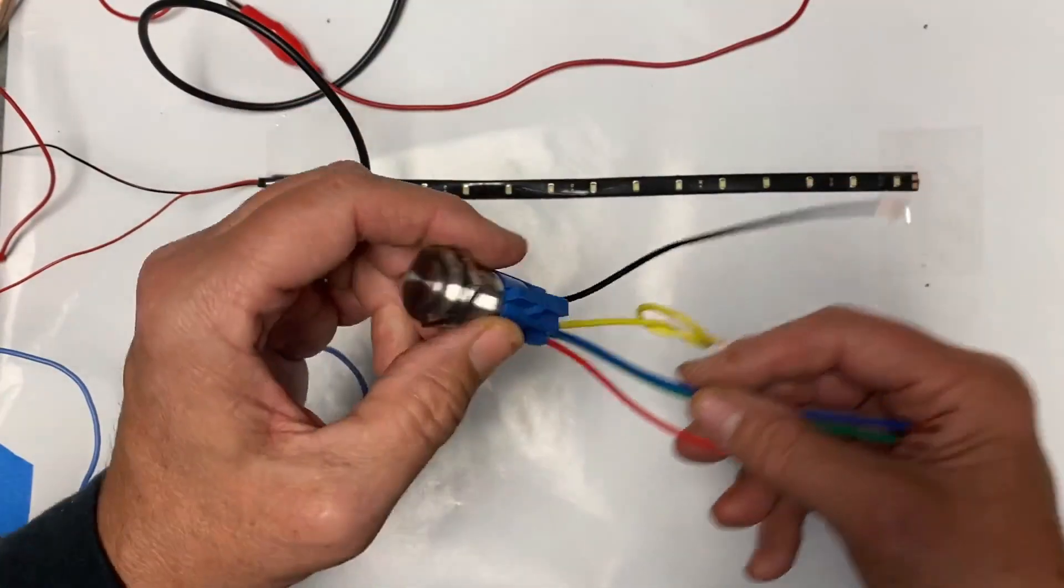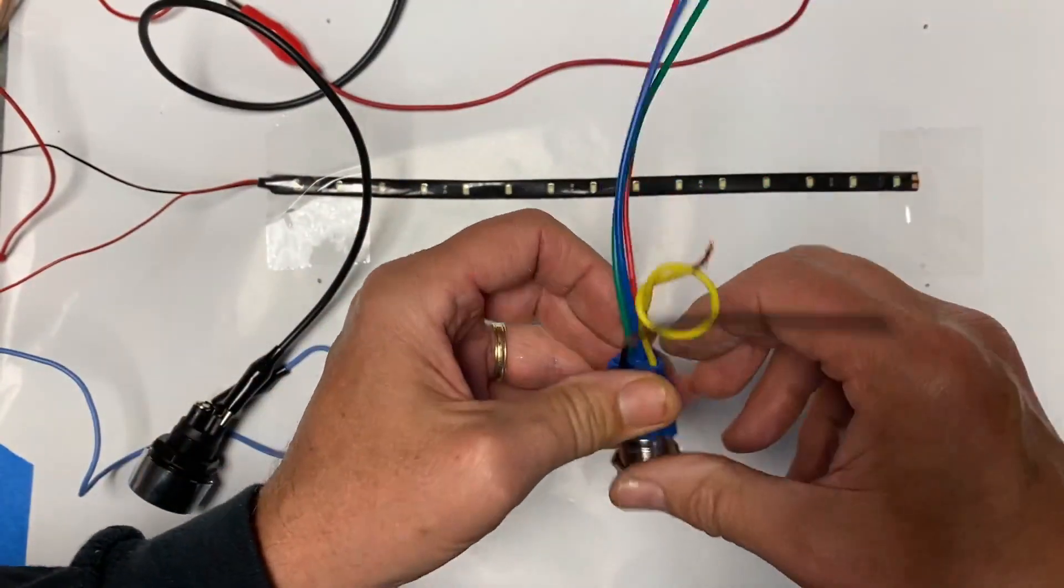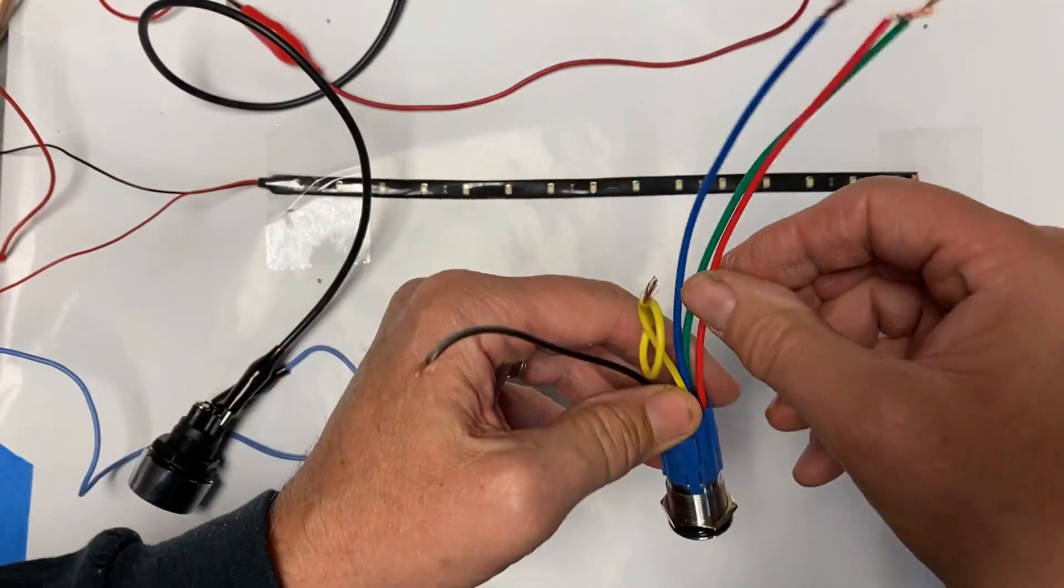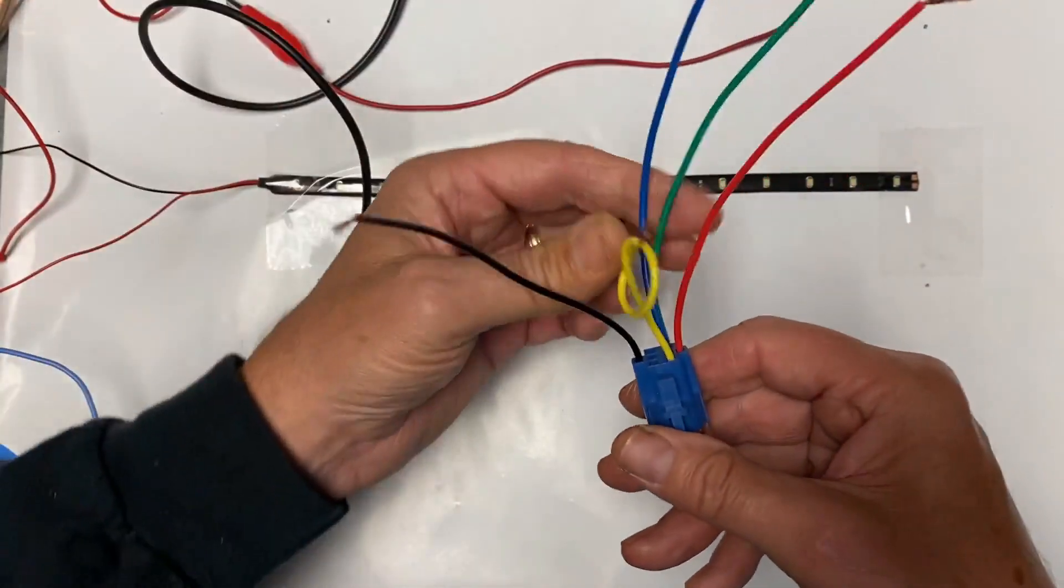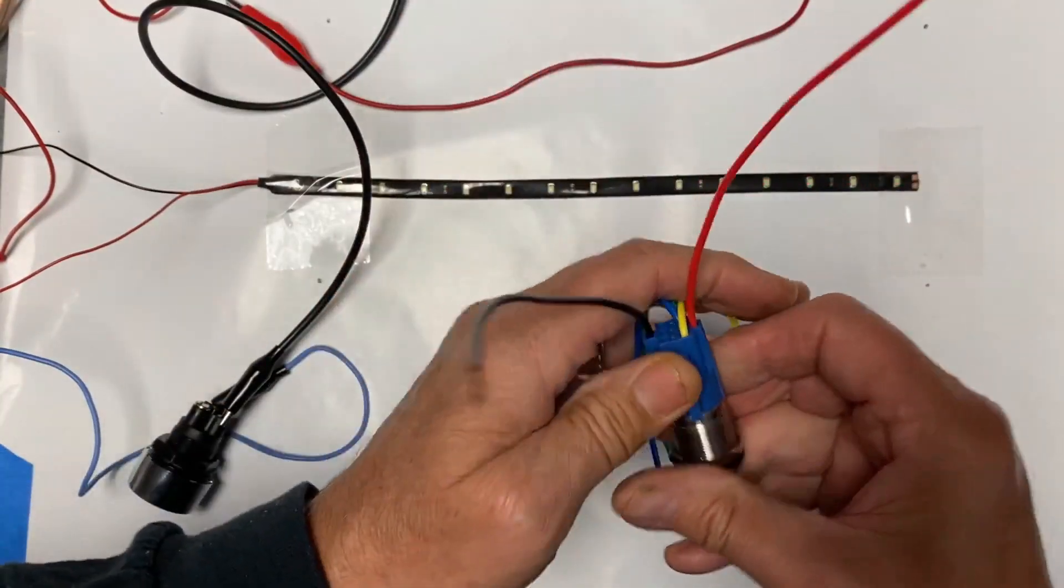To know how to hook this up, you need to know what the different wires are for. The red and the black activate the LED light ring.